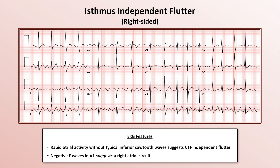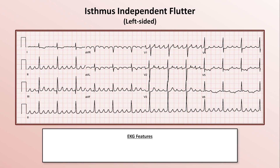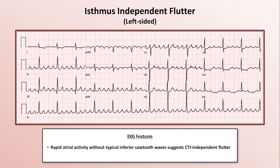In this second example, we again see very rapid atrial activity in the inferior leads that lacks the typical sawtooth morphology, suggesting an isthmus-independent flutter. But unlike the last example, there are positive waves in V1, suggesting that a left atrial reentrant circuit is responsible.